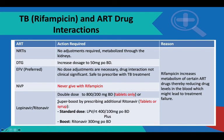Lopinavir/ritonavir: you have two options. You can double the dose, but you can only double the dose of tablets — don't double the dose of a syrup, like two mils becoming four mils, as you won't get the right blood levels in children. The standard dose is 400 over 100, so when doubling you're giving 400 over 200. This is mainly for tablets, even in children who take tablets.